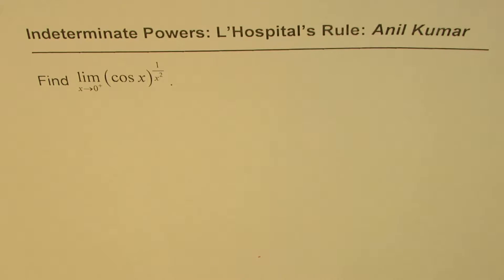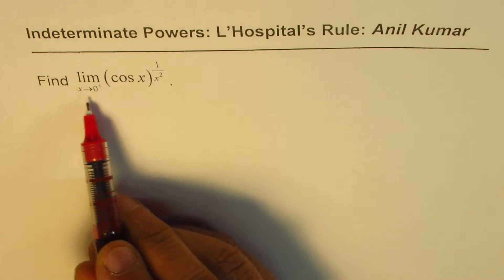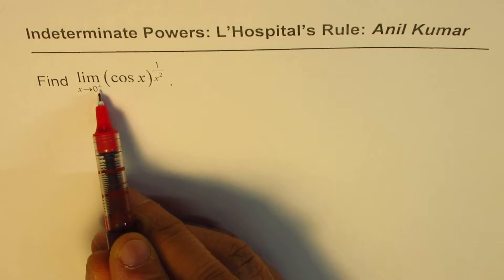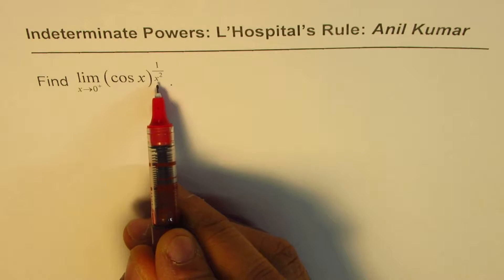I'm Anil Kumar and in this video we'll try to understand how to find limits when we have indeterminate powers. The question is, find limit when x approaches 0 from the right side for cos x to the power of 1 over x squared.